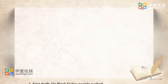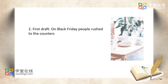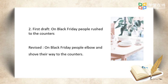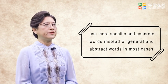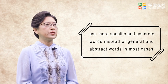Now it is your turn. In each of the following sentence pairs, notice how the italicized words in the first sentence provide little information, whereas those in the revised sentence provide interesting details. For example: First draft — 'On Black Friday, people rush to the counters.' Revised version — 'On Black Friday, people elbow and shove their way to the counters.' In the second draft, we use strong verbs to spice up our writing. In order to write compellingly, we should use more specific and concrete words instead of general and abstract words in most cases.